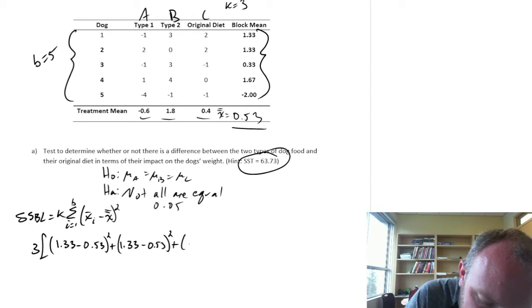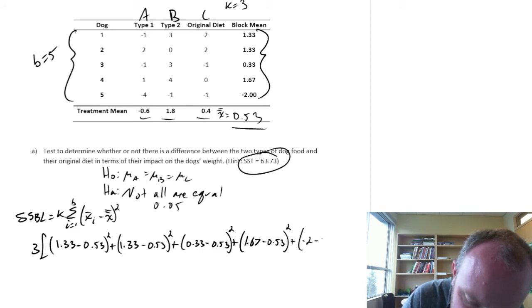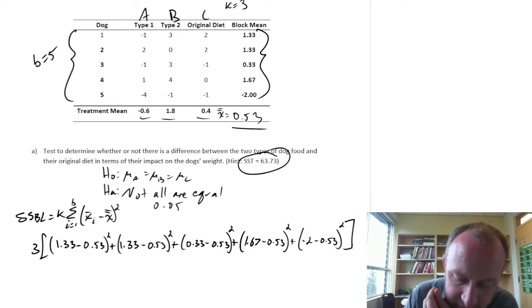Next one is 0.33. Next one's 1.67. Next one is negative 2. Does all that fit? Oh, just barely. Okay. Let's get the calculator.